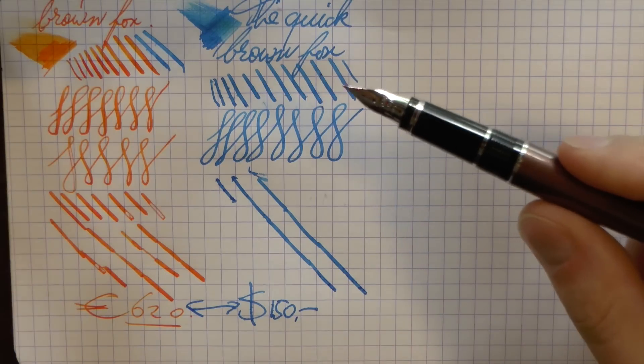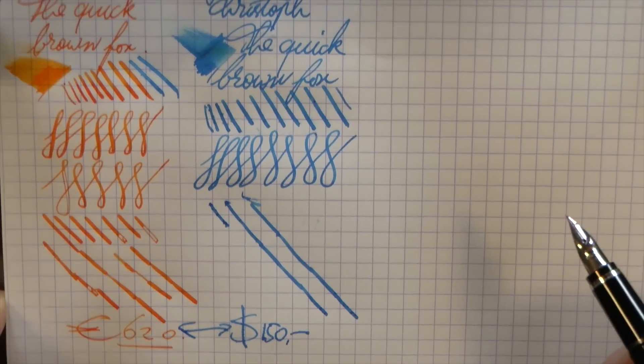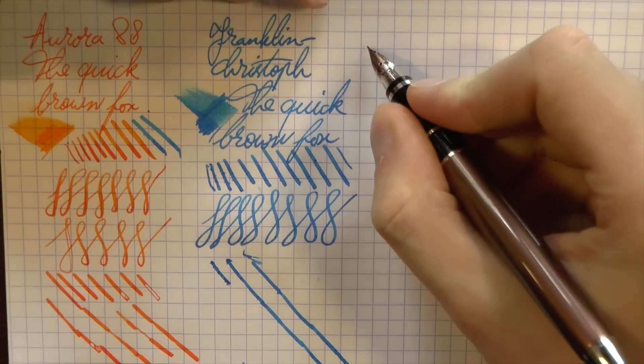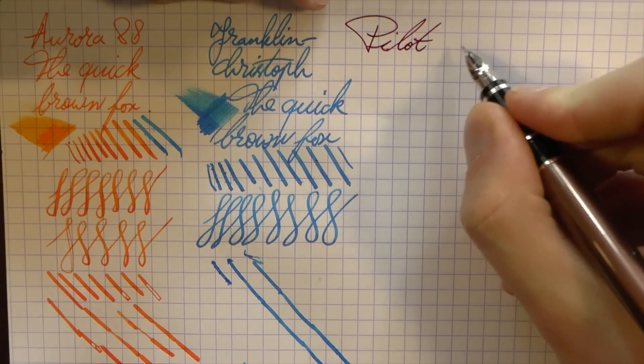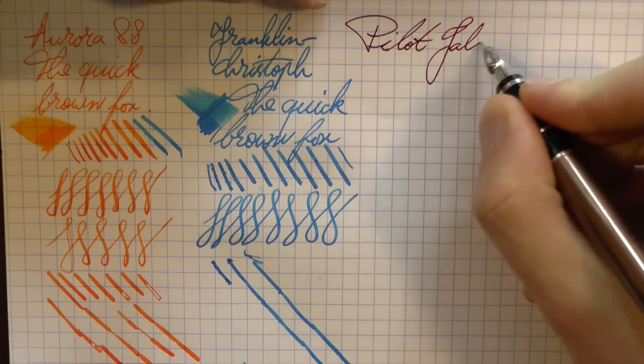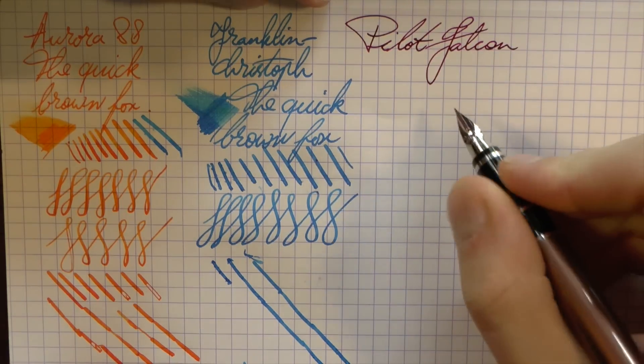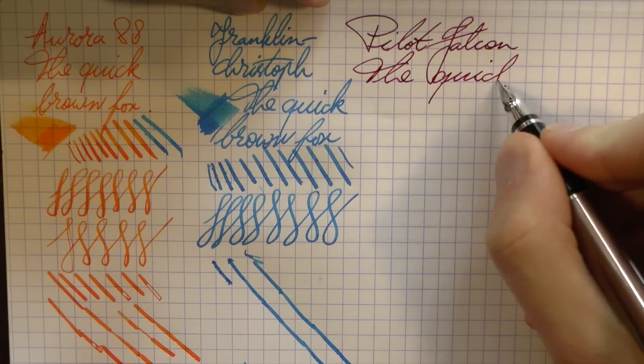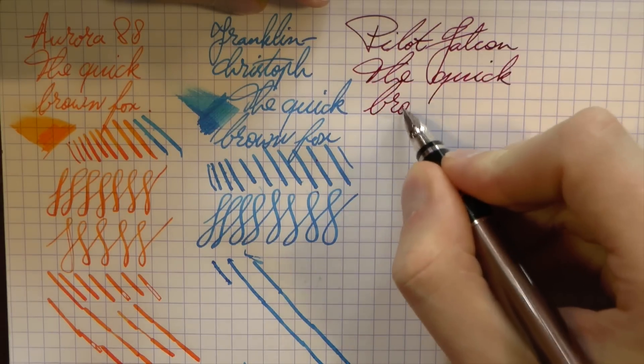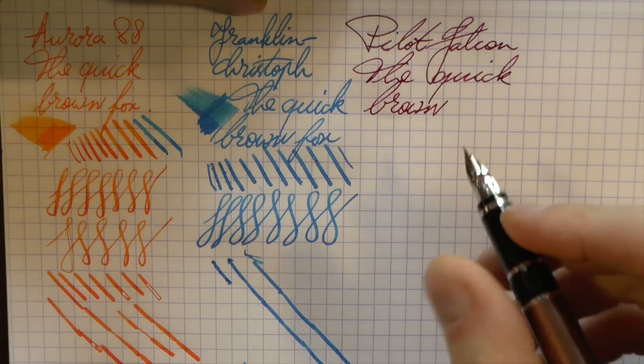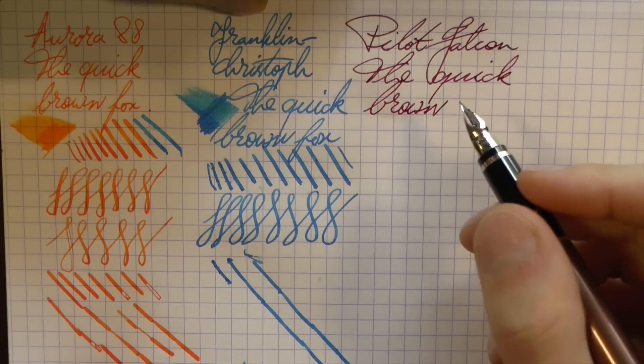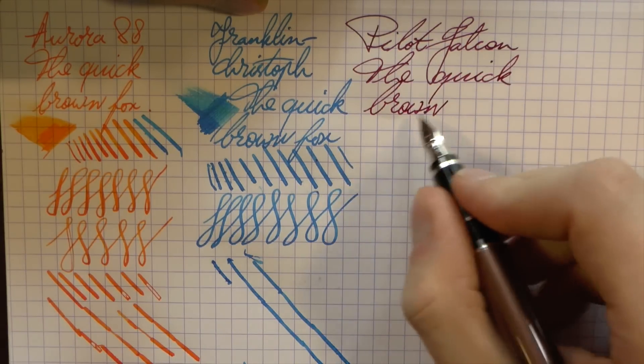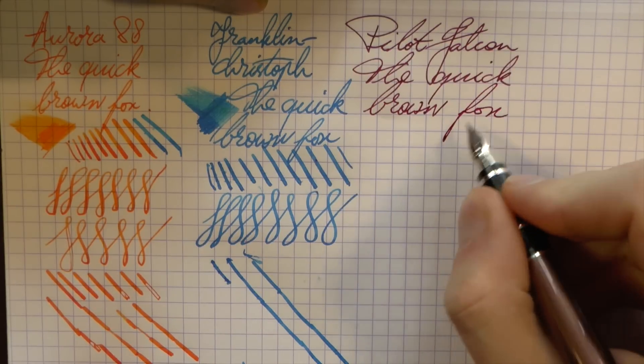Okay, then finally, there is the Pilot Namiki Falcon. As I said, in this case, the metal version, but this is also an Iroshizuku ink. As you can see, this is a very fine nib. It is a Japanese nib. And as I have said before, Japanese nibs typically are a grade smaller than their Western counterparts. So this fine is leaning towards a Western extra fine. It's a pretty dark ink, so I don't know how well you see that. But it's definitely very fine.